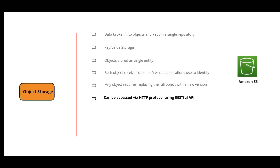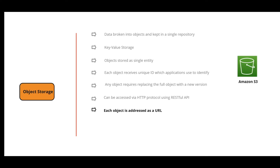Simple Storage Service, or S3, is the Amazon service for storing objects in the cloud. Objects are accessed via HTTP protocol using the REST API, which allows applications to create, update, copy, and delete objects in buckets. Buckets, or containers, are where the objects are stored. S3 is one of the core services of AWS.